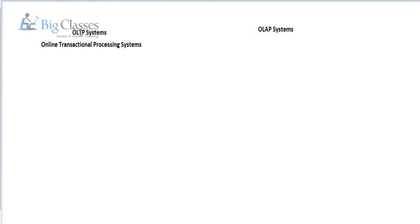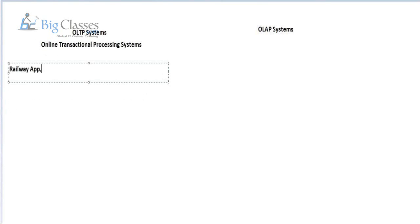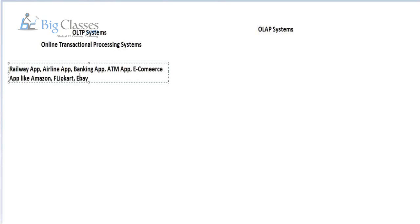When I say a transaction, let's look at examples of OLTP systems we see in our daily life. If you go to a railway application when you want to book a ticket, or an airline application when you want to book a plane ticket, or a banking application for banking transactions, or an ATM withdrawal center — these are all OLTP systems. When you want to book products online, you use e-commerce applications like Amazon, Flipkart, or eBay. These are all examples of the OLTP system.